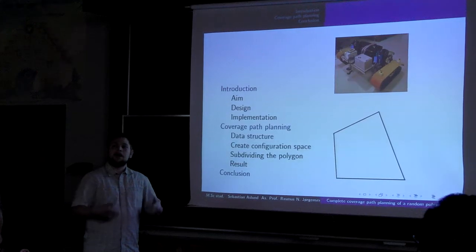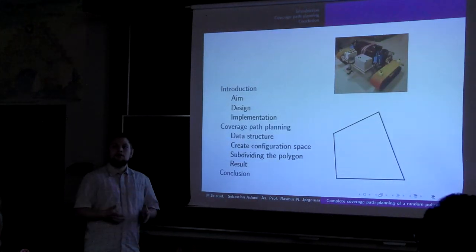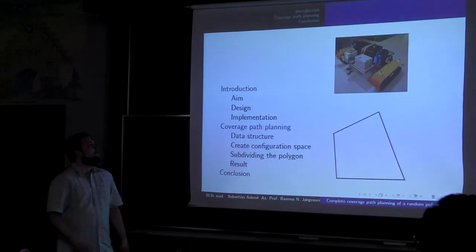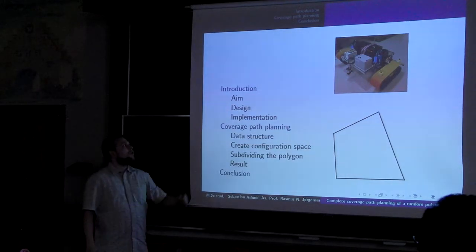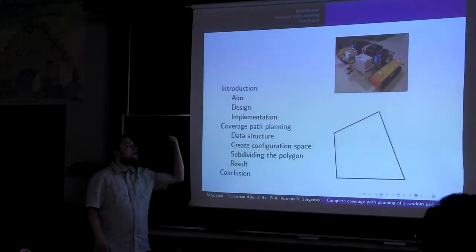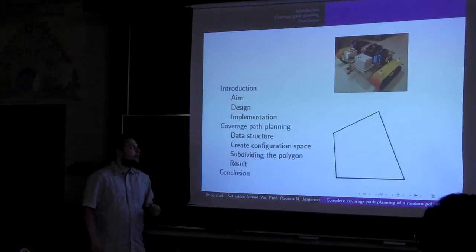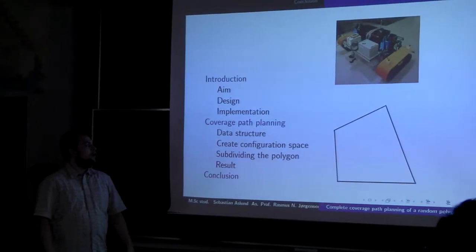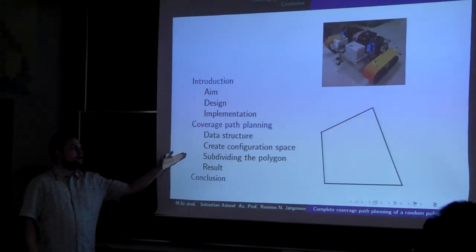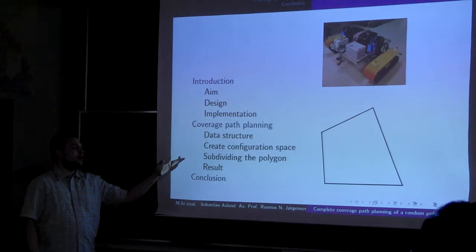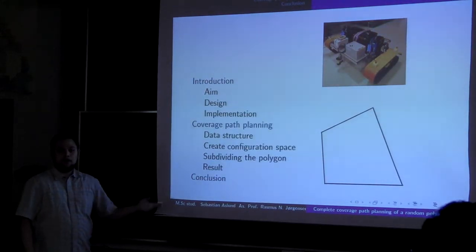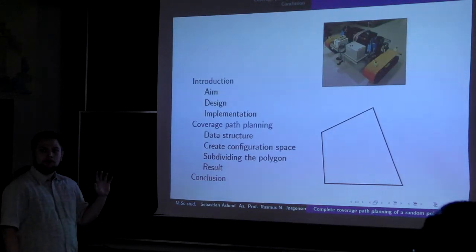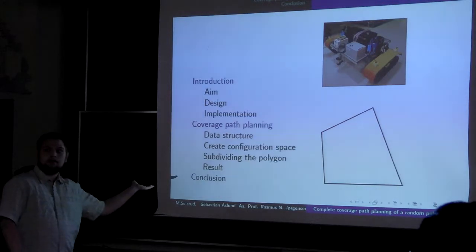That is why we are calling this complete coverage path planning. Because complete means that we are guaranteeing that given an area, you are able to complete the coverage without missing anything. In my presentation here, I will teach you about the aims of the project, the design and implementation. Then I follow it by going into my coverage path planning algorithm, and talk about data structure, how I create a configuration space, and how I subdivide the polygon, and then I present some results.